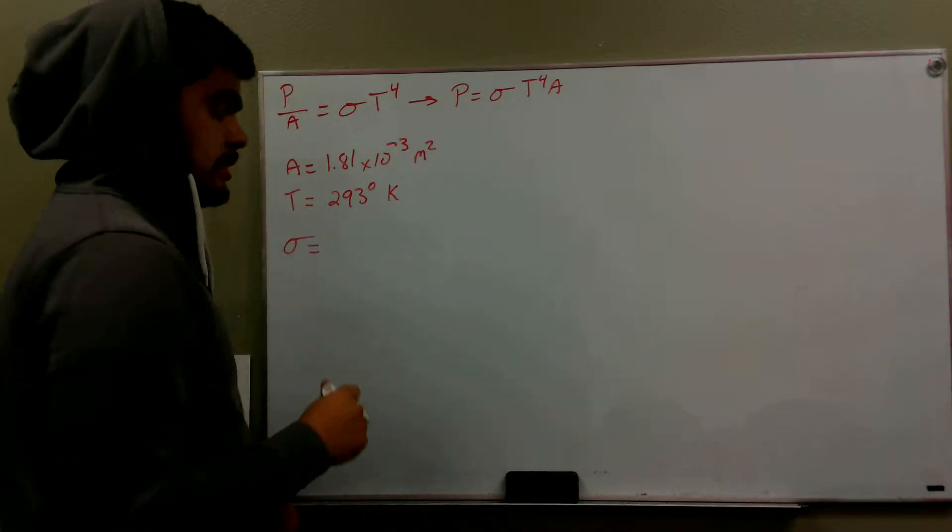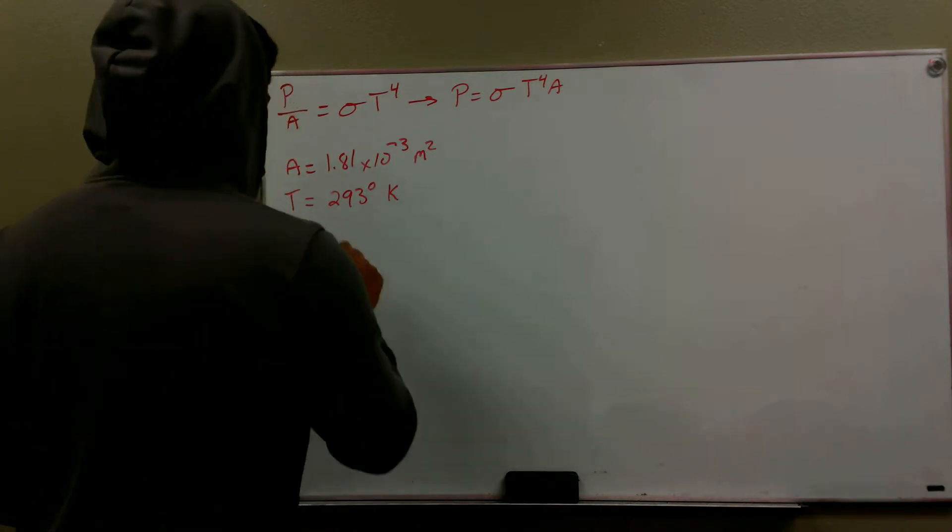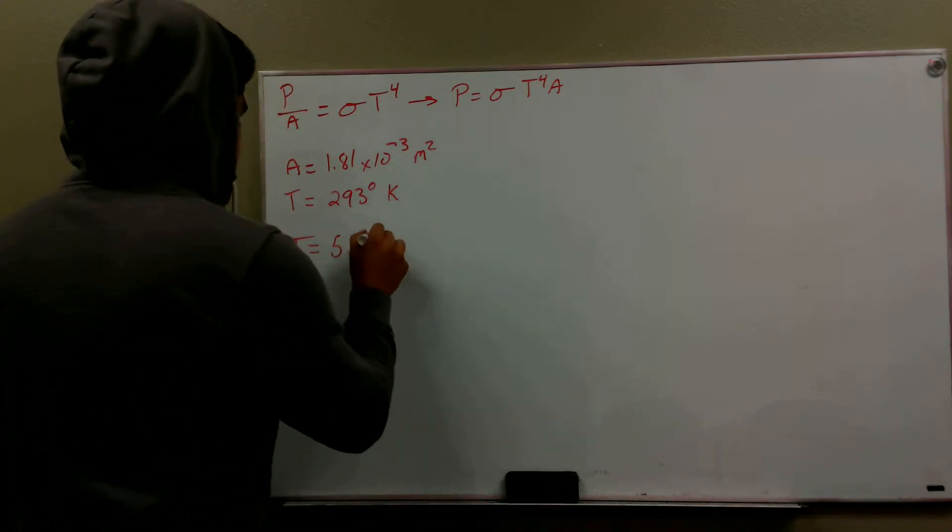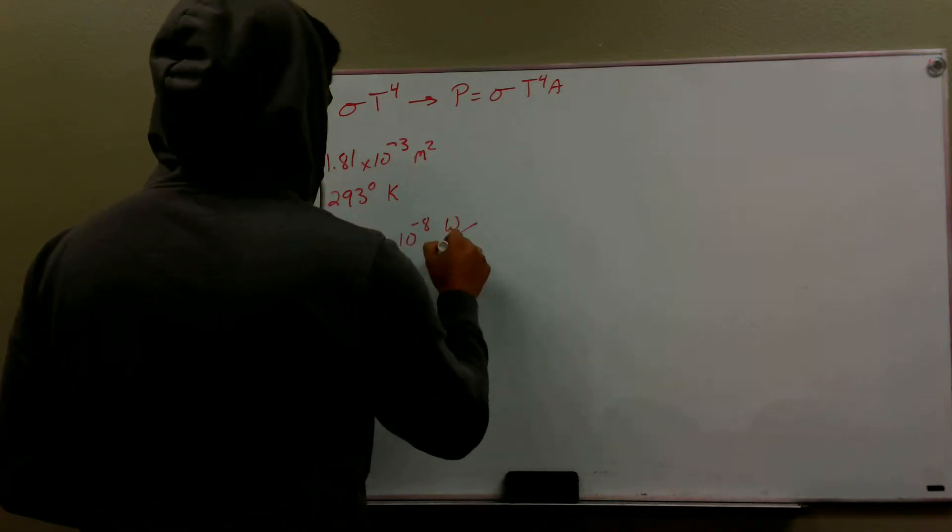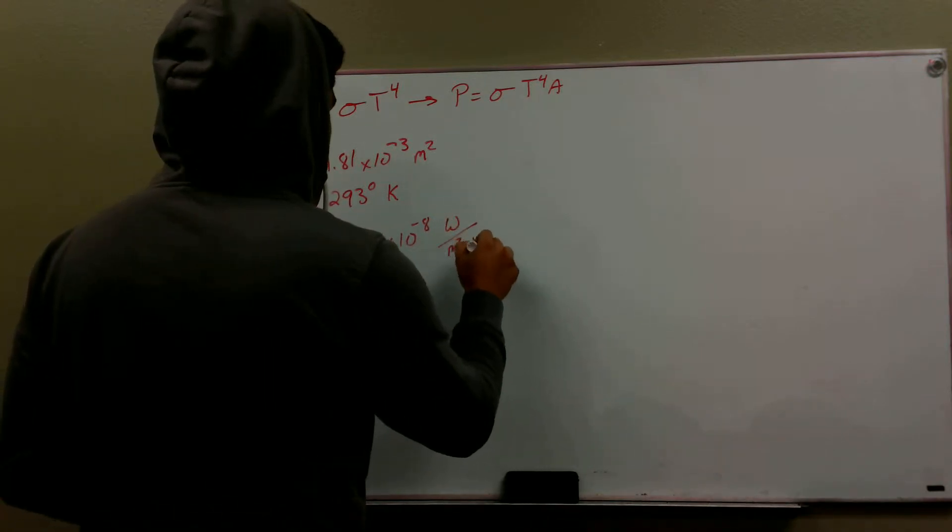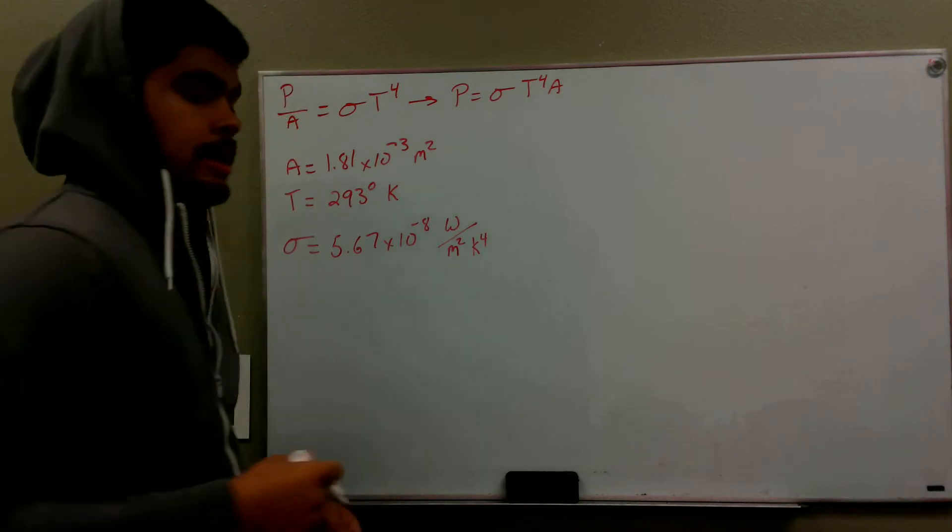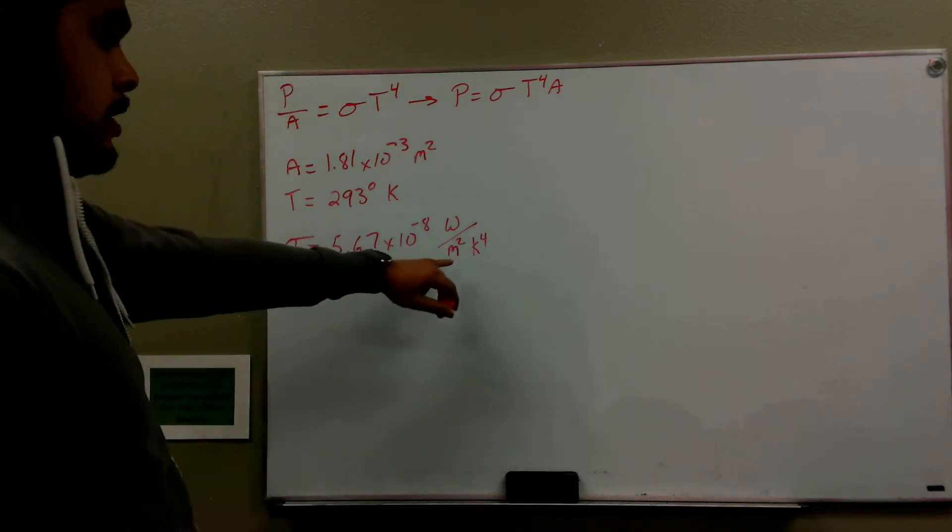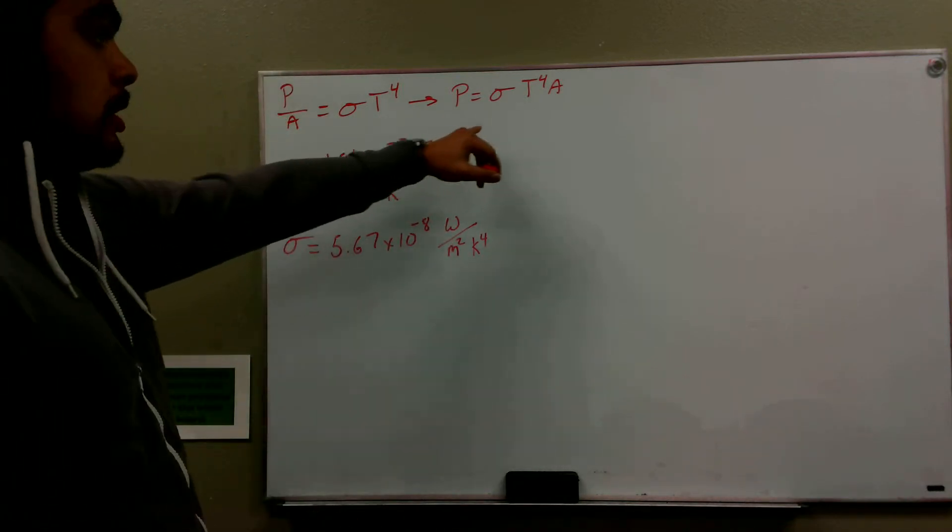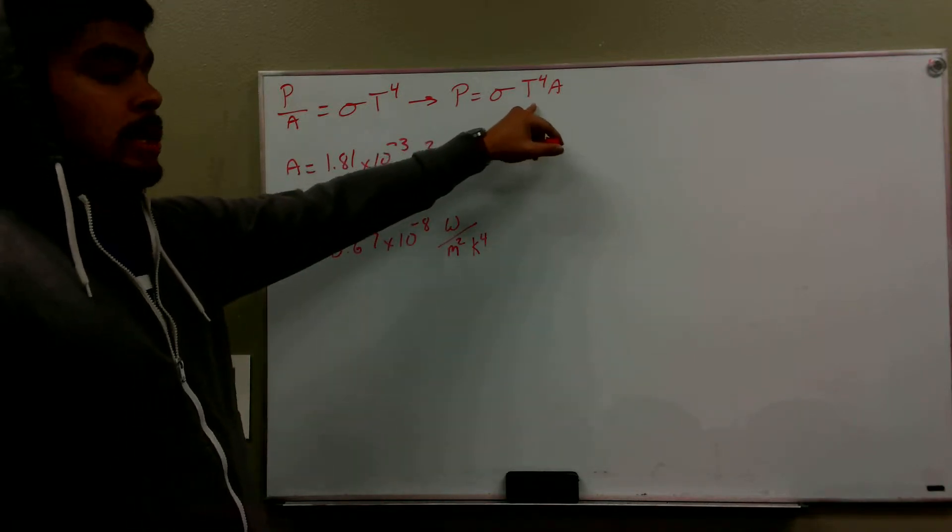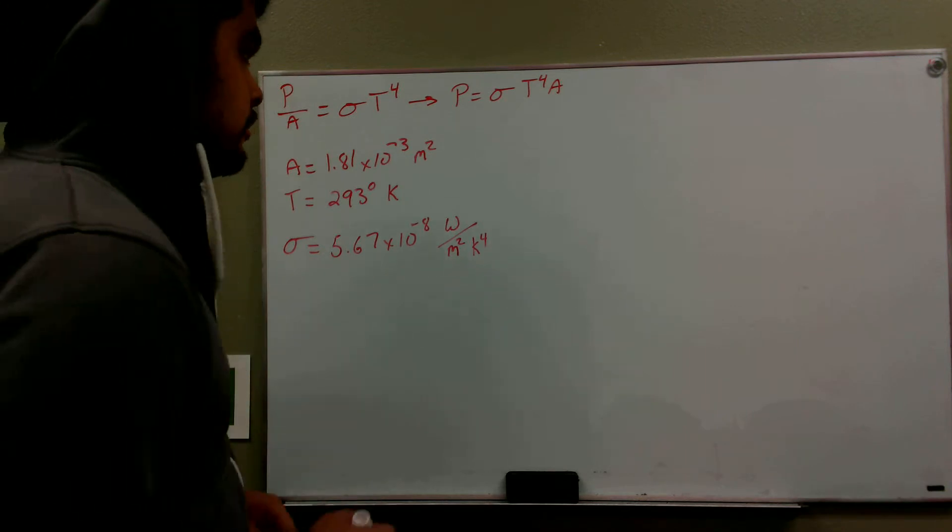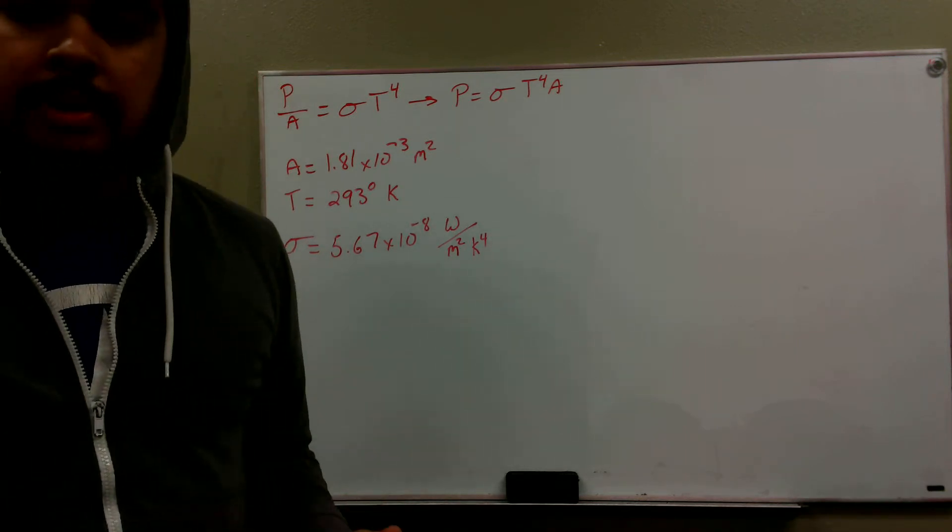And our sigma is, as I said before, just a bunch of constants. This is 5.67 times 10 to the minus 8. And the units on here are watts over meters squared Kelvin to the fourth. If you noticed, we have meters squared on the bottom, and when we multiply it, these will cancel out with the meters squared on top. And we have our Kelvin to the fourth, which will be canceled out by our temperature to the fourth. At this point we know everything that we need to know.